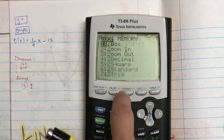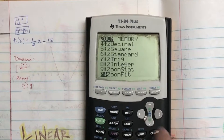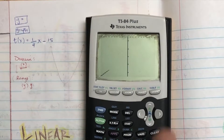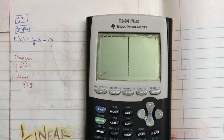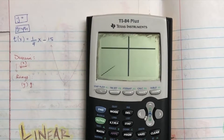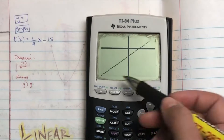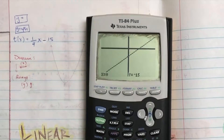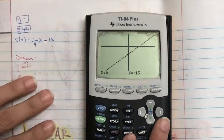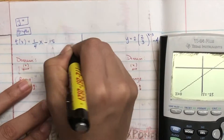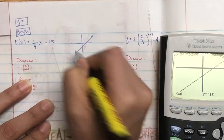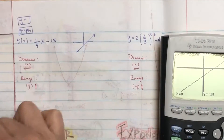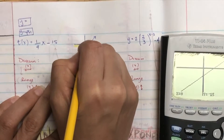If that doesn't work, you could always zoom in. You could do zoom fit, and then you can zoom out — hit zoom again, then zoom out, press enter, press enter again and it zooms out for you. So you can see it's just a straight line — it's a linear equation, completely straight. I'm going to sketch it.